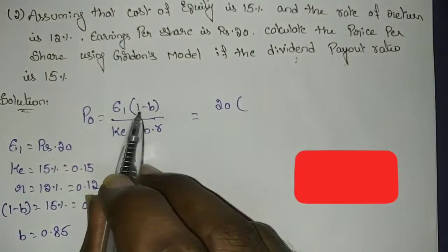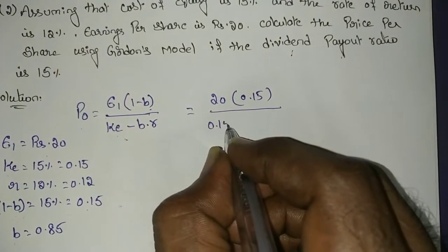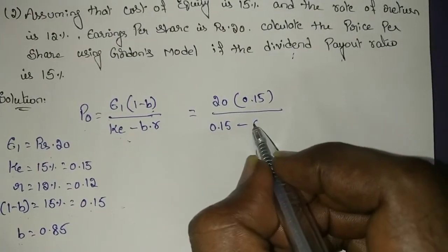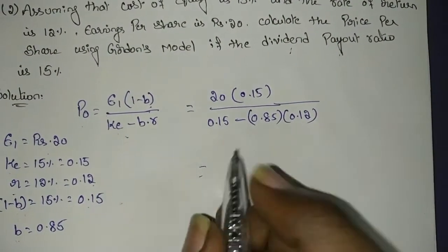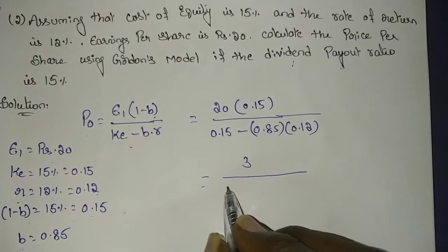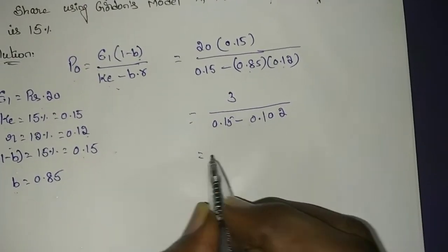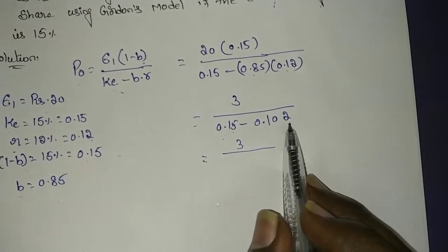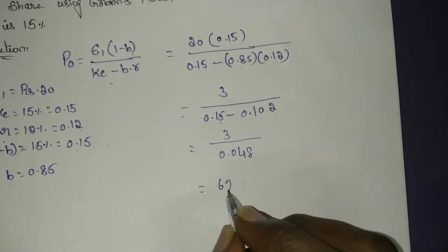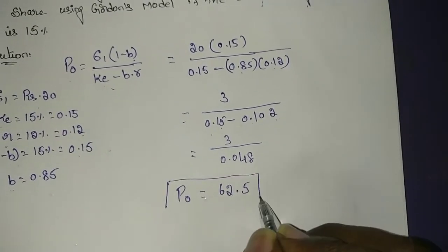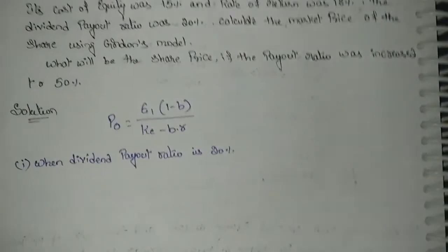Substituting: E1 = 20, (1 - b) = 0.15, ke = 0.15, b = 0.85, r = 0.12. So: 20 × 0.15 = 3 in the numerator. In the denominator: 0.15 - (0.85 × 0.12) = 0.15 - 0.102 = 0.048. Therefore P0 = 3 / 0.048 = 62.5. The price per share is rupees 62.50.